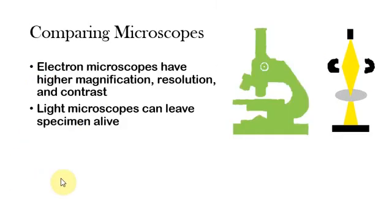Now the important thing in biology is not so much how the two of them function separately, but which cases you'll use which of them. And so it's important to compare the two types of microscopes. Now of course electron microscopes, they just sound more modern, more complicated, and that's true. They have a much higher magnification, resolution, and contrast.